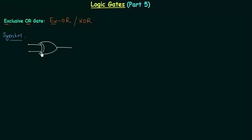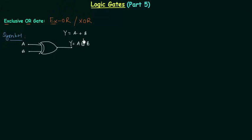Taking two inputs A and B, the output is Y, so Y equals A XOR B. For the OR gate we used a simple plus sign, but for XOR we place the plus sign inside a circle. This is the traditional symbol for the XOR gate.